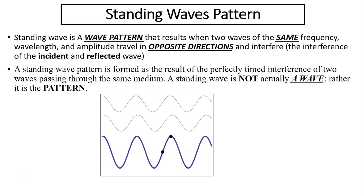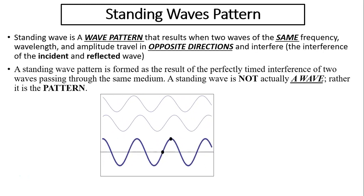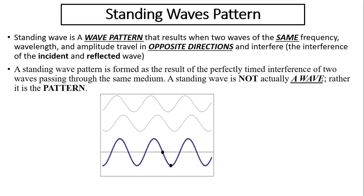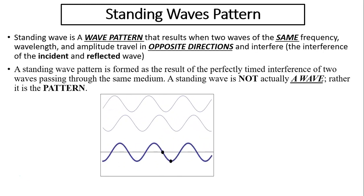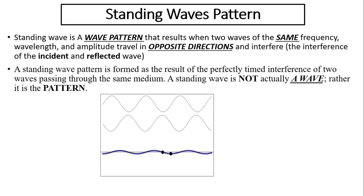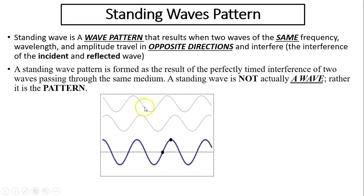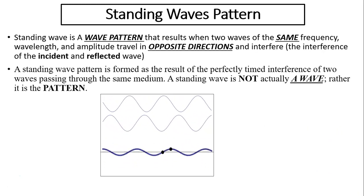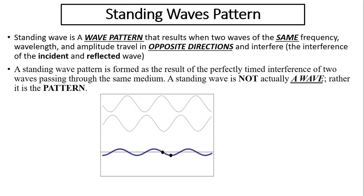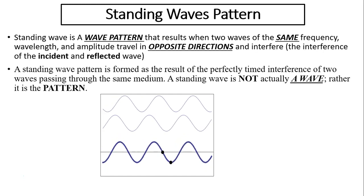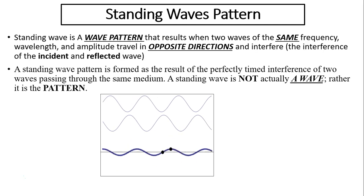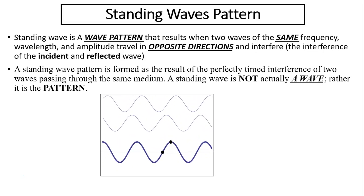Standing wave pattern. A standing wave is actually not a wave. Standing wave is a wave pattern that results when two waves have the same frequency, wavelength, and amplitude — two exactly identical waves traveling in opposite directions — the top one going to the right, the bottom one going to the left — and interfere. The standing wave pattern is formed as a result of a perfectly timed interference of two waves passing through the same medium. A standing wave is a pattern; it is an interference pattern.